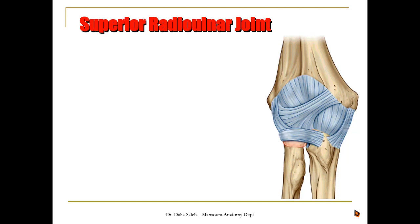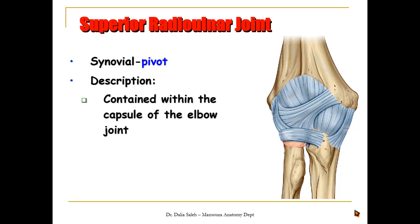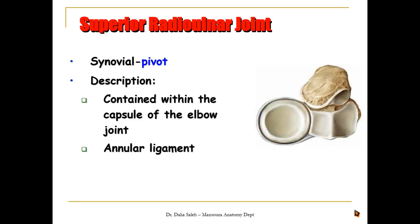The superior radio-ulnar joint is a synovial pivot joint — a uniaxial joint that allows rotation. It is made by an axis that fits inside a ring: the axis is the head of the radius, while the ring is made partially by the radial notch on the ulna, completed by the annular ligament. This joint is contained within the capsule of the elbow joint. The annular ligament is a fibrous ligament attached to the margins of the radial notch of the ulna, inside which the head of the radius fits and rotates around its vertical axis.